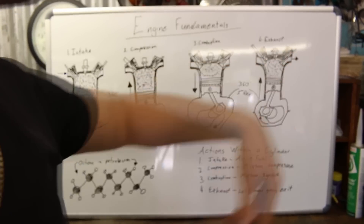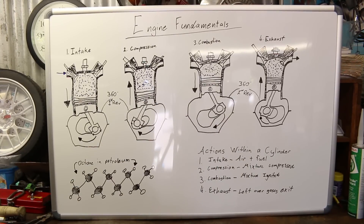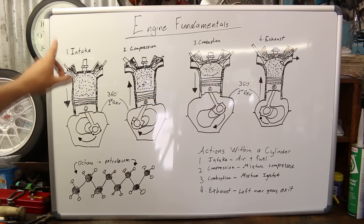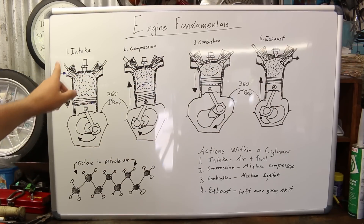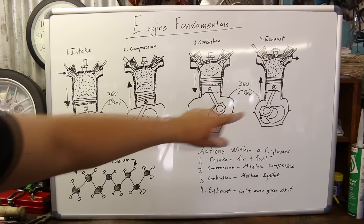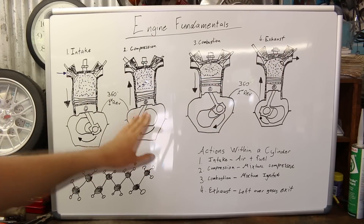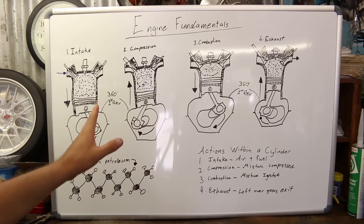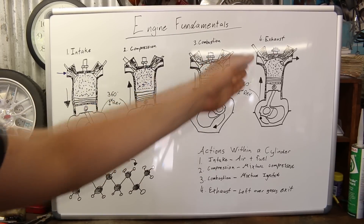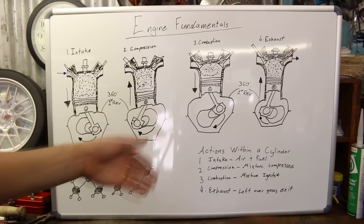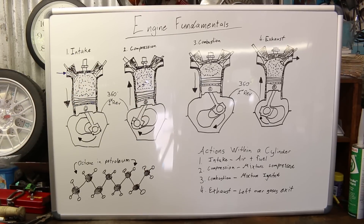That is how the exhaust stroke works. Along with all four strokes, the cycle continues in a repeating loop, and that is how a four-stroke engine is able to run by itself as long as it keeps performing these four actions. Keep in mind there are many other parts in an engine that enable this to work properly, but this is the basic concept — the four strokes explained with hydrocarbons, air, and our ignition source, the spark plug, creating combustion and power.